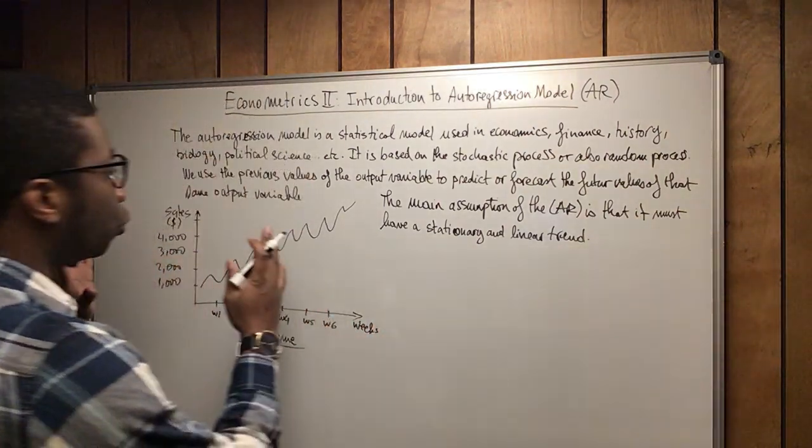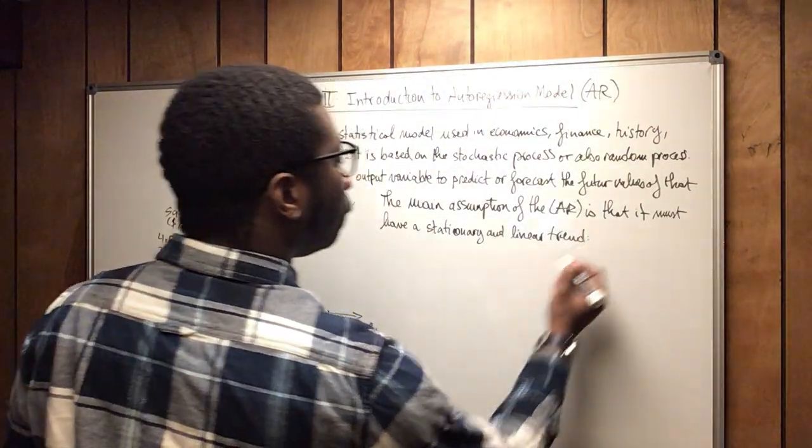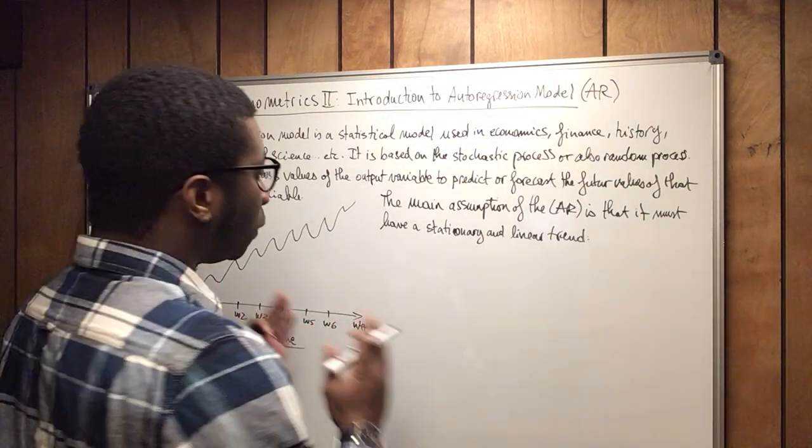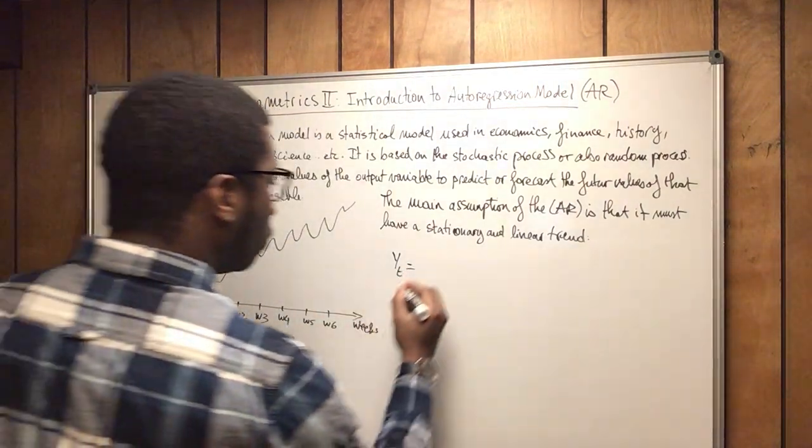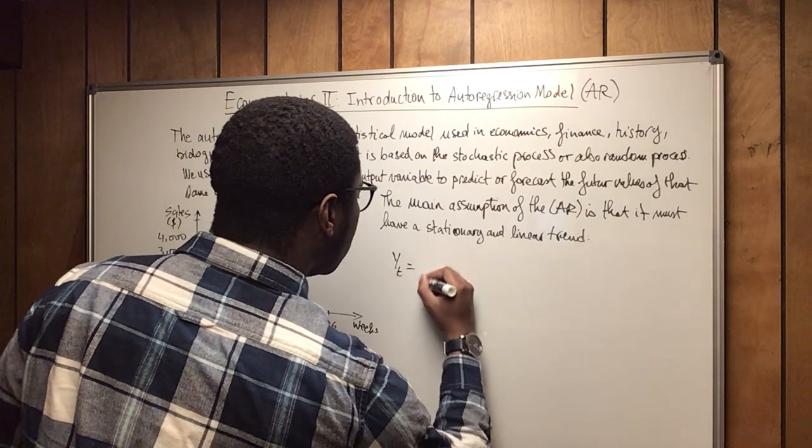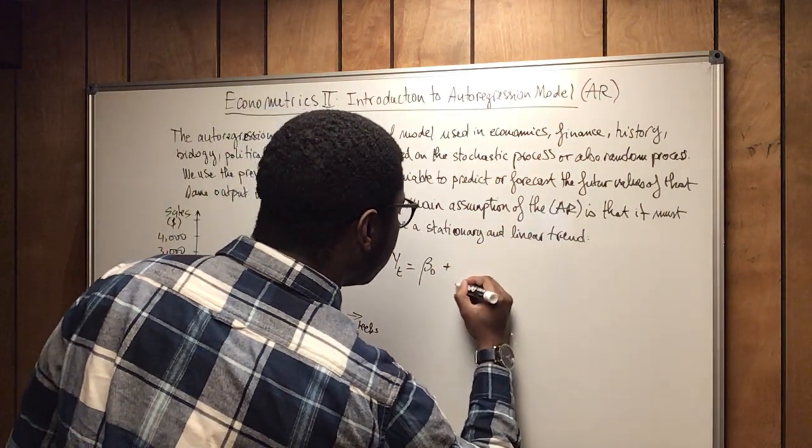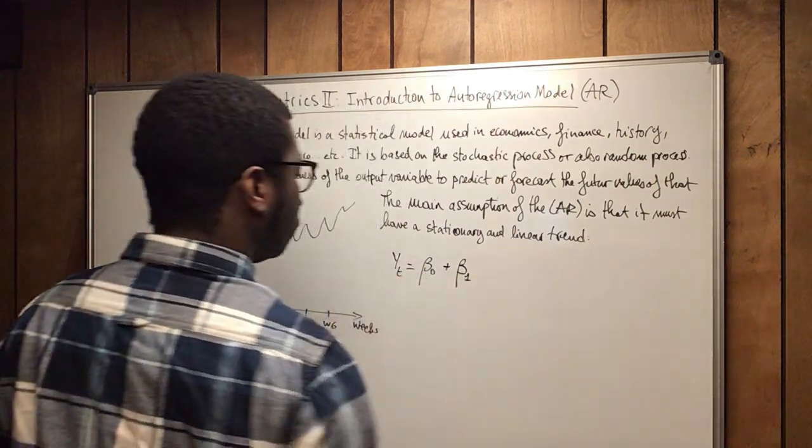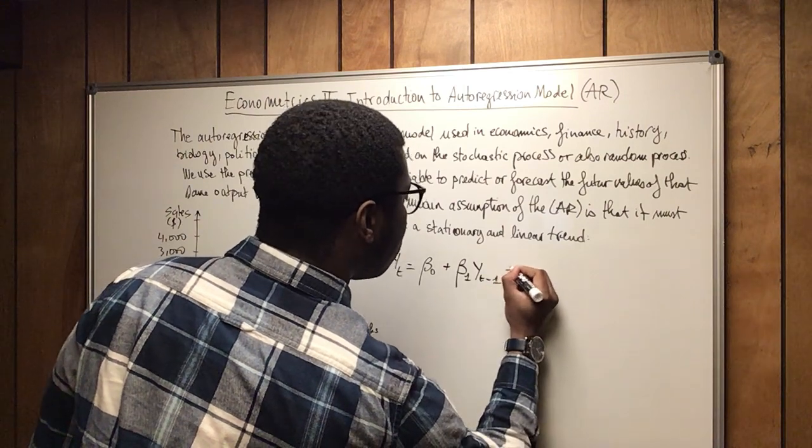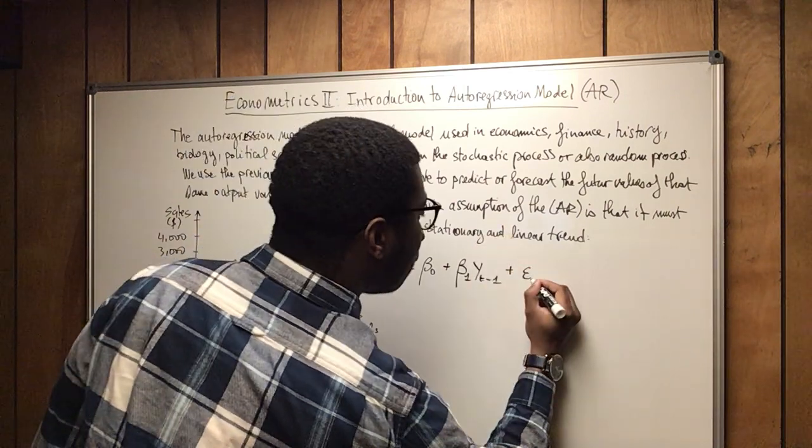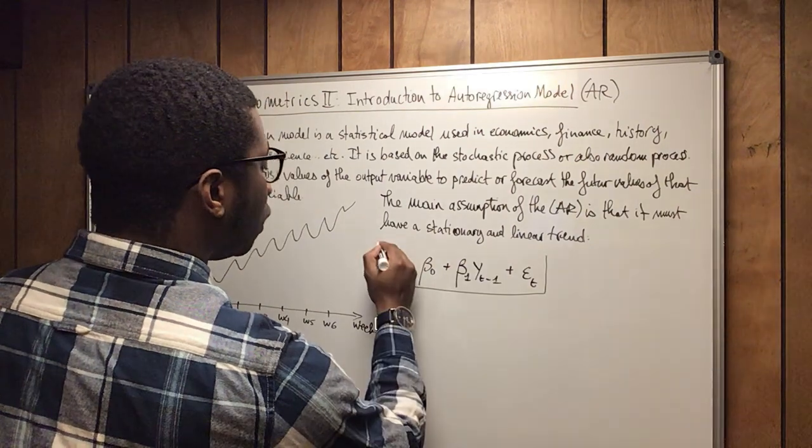So how would you write the model of the autoregression? The autoregression always starts with one lag. So we will write it this way: yt, t for time, equals beta zero, which is of course the fixed parameter, plus beta one, yt minus one, plus epsilon t. This is the model of the AR one.